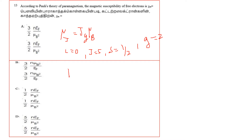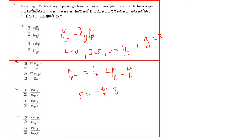The magnetic energy of the electron in field B is E = minus mu_electron · B. When parallel to the field, E equals minus mu_B · B; when anti-parallel to the field, E equals plus mu_B · B.